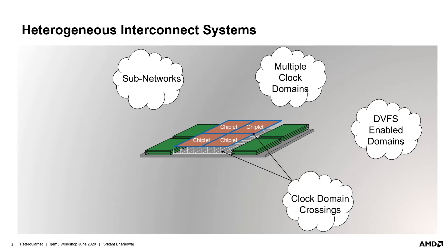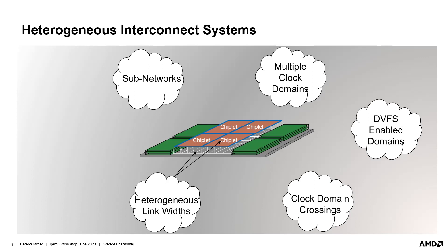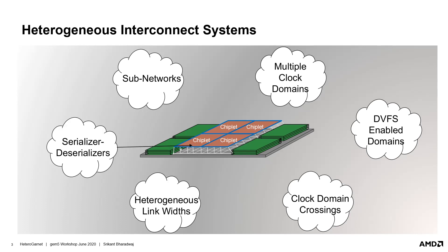These domains would require clock domain crossing units that would synchronize data and control signal transfer across them. Further, the interposer network could be utilizing different physical link bandwidths. Such systems would require serializer deserializer units to convert packets between these link width boundaries. These are just examples of some of the levels of heterogeneity that a 2.5D integrated architecture could bring into the interconnect system.